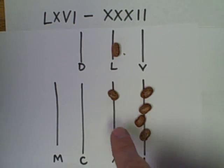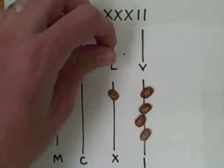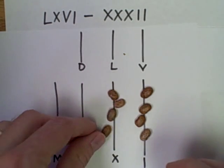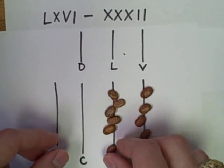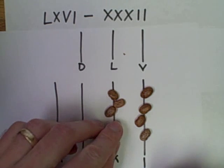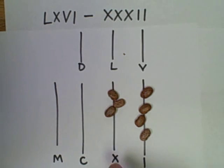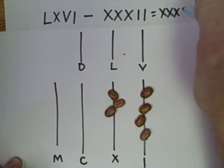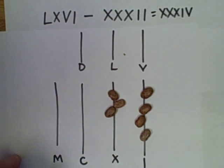To take away three X's, I only have one in the X, so I'll exchange this L for five X's. And take away three of them. And now my difference is three X's and four I's. Now I'm really going to write those four I's as IV.